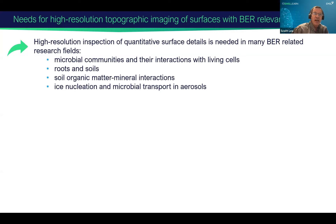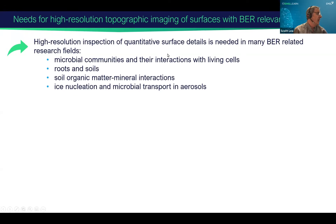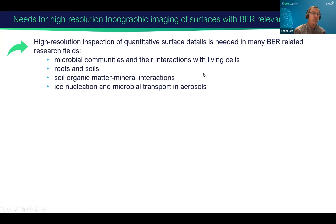What we're trying to do is use helium ion microscopy to do high resolution topographic imaging of surfaces. We need the imaging to provide a lot of details on the surface in order to understand some of the processes occurring there. Some of the processes related to BER include interactions between microbes in communities, roots and soils and rhizosphere interactions, organic matter mineral interactions, and ice nucleation, microbial transport, and aerosols.